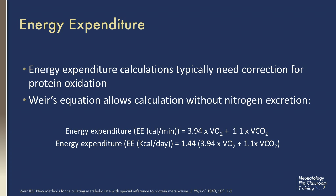Energy expenditure calculations originally required correction for protein oxidation using the measurement of nitrogen in urine. In 1949, Weir worked out a mathematical simplification of the energy expenditure equation that included the protein effect as a constant. This simplified energy expenditure equation requires only oxygen consumption and carbon dioxide production, and provides valid estimates of energy expenditure which may be used clinically.